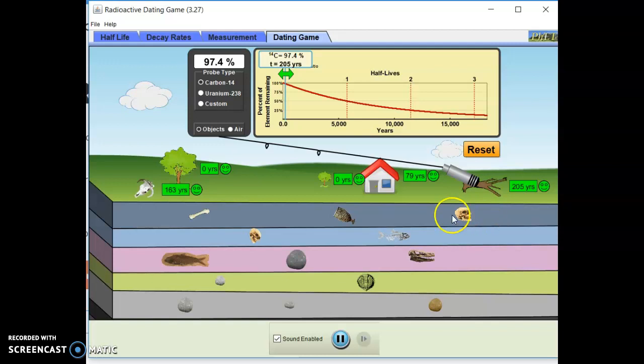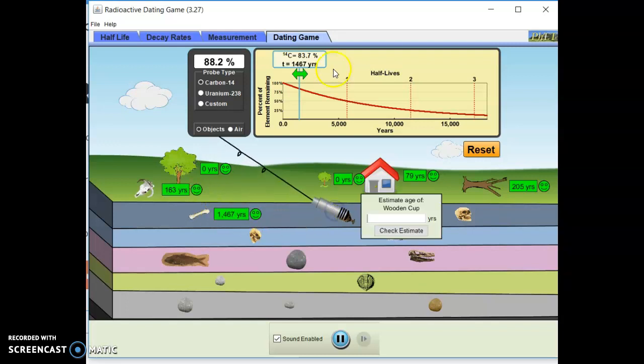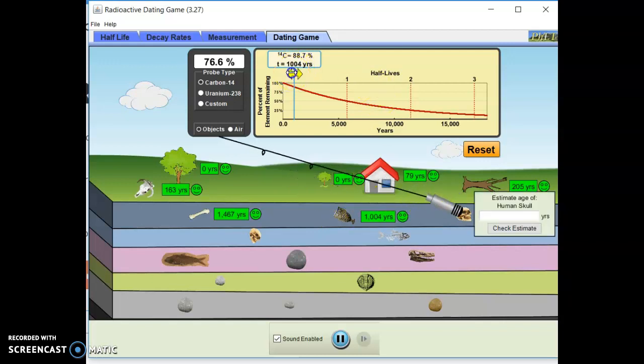Okay. Let's move to the bone. 83.9. Try this. Sometimes they'll give it to you. I'm 1,467. Okay. First human tool. 76.6, 2,182. Okay, moving along.